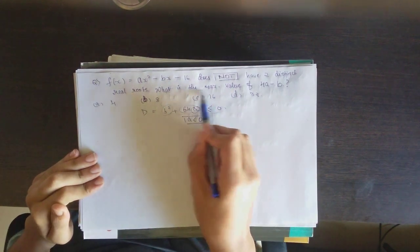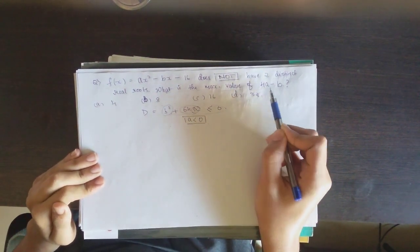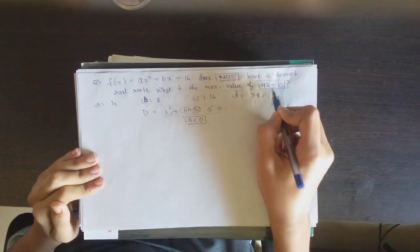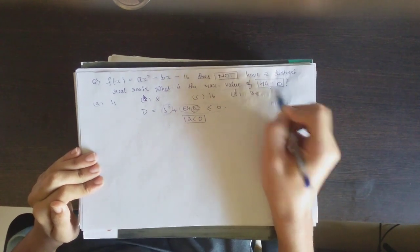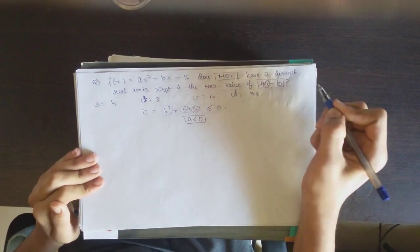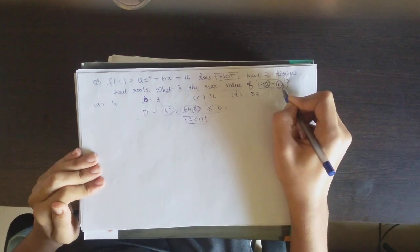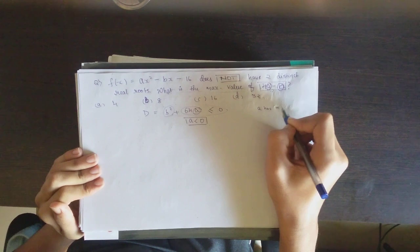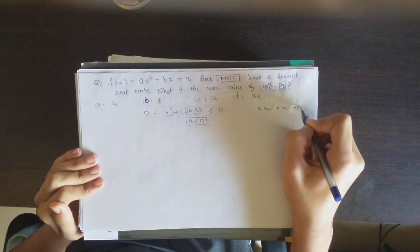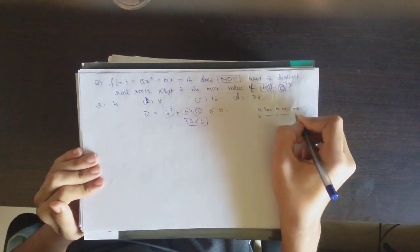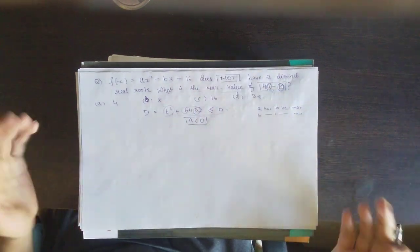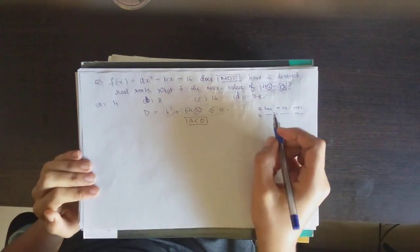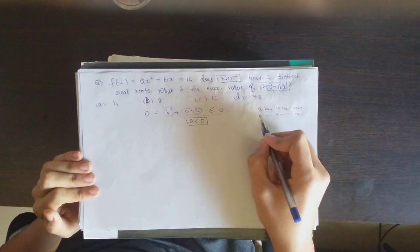And they're asking what is the maximum value of 4a minus b. So in 4a minus b, if we want this to be maximum, we know a has to be maximum and b has to be as minimum as possible. So a has to be maximum and b has to be minimum.